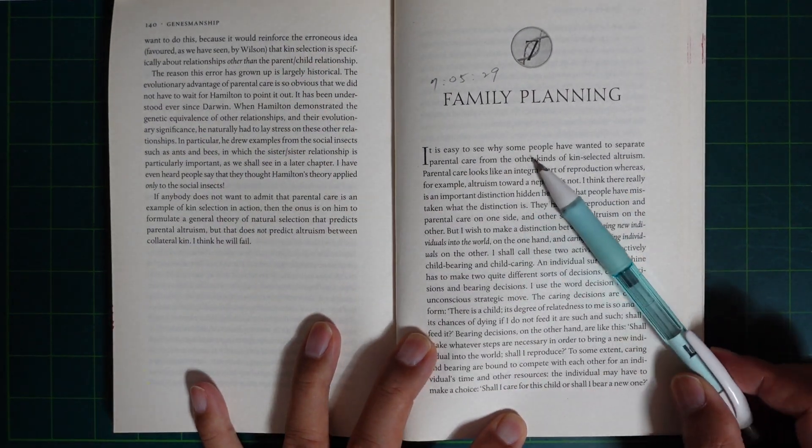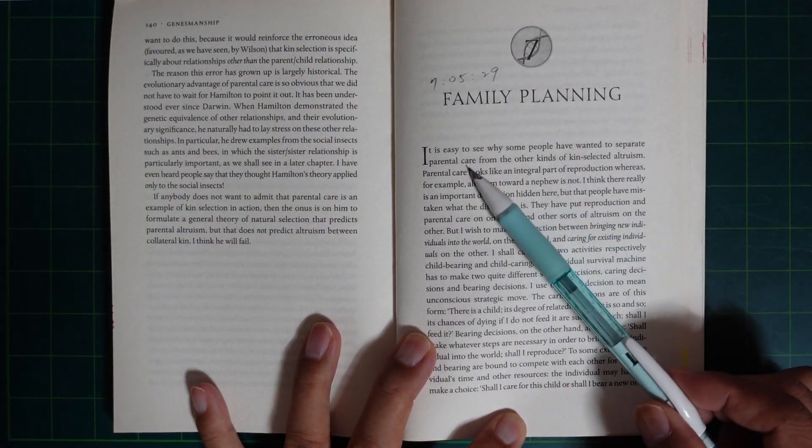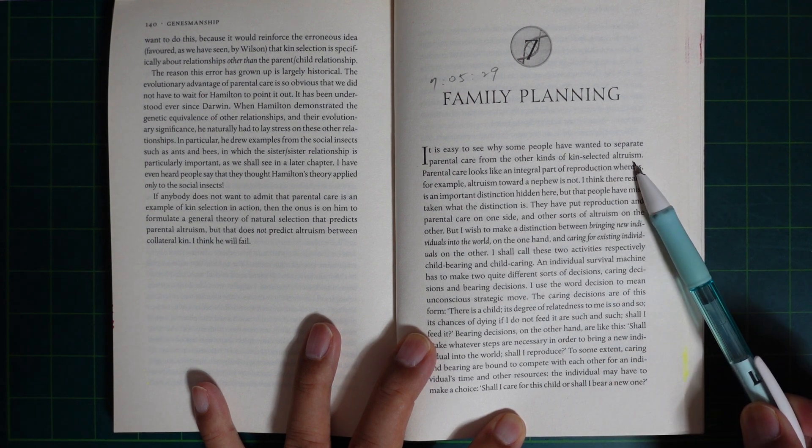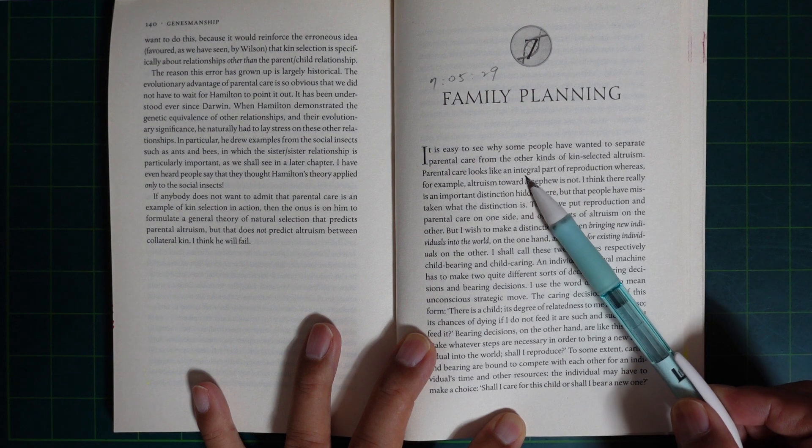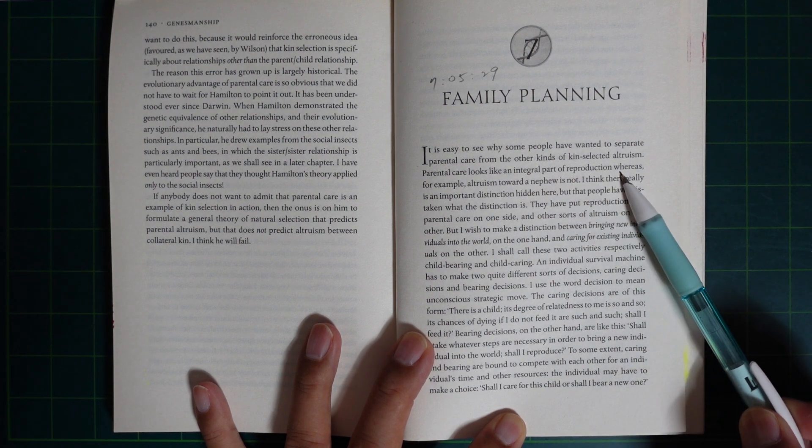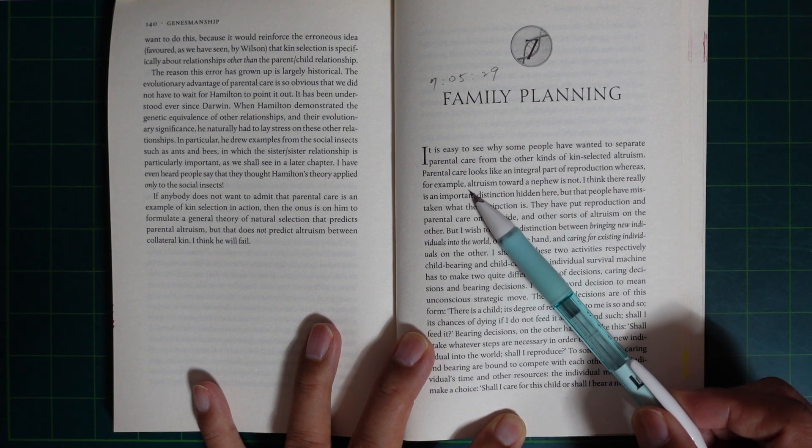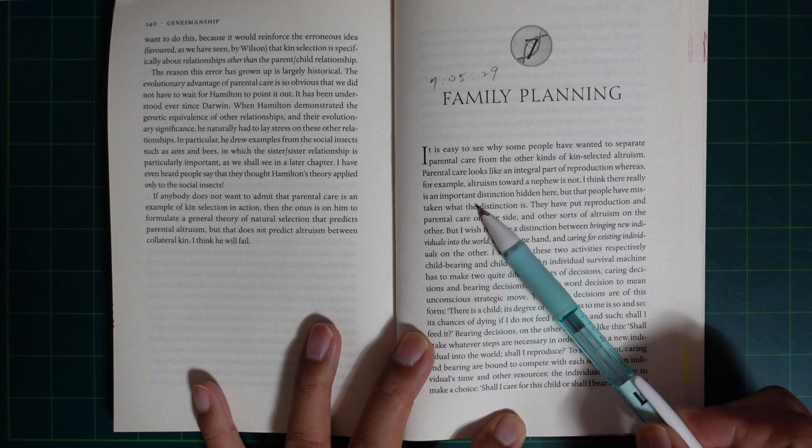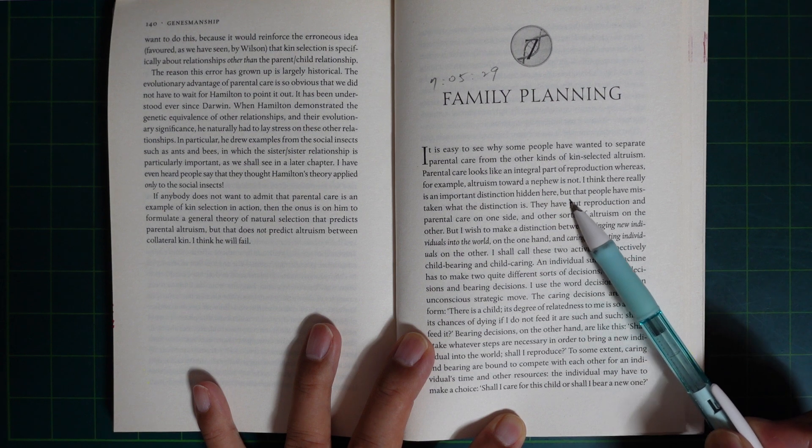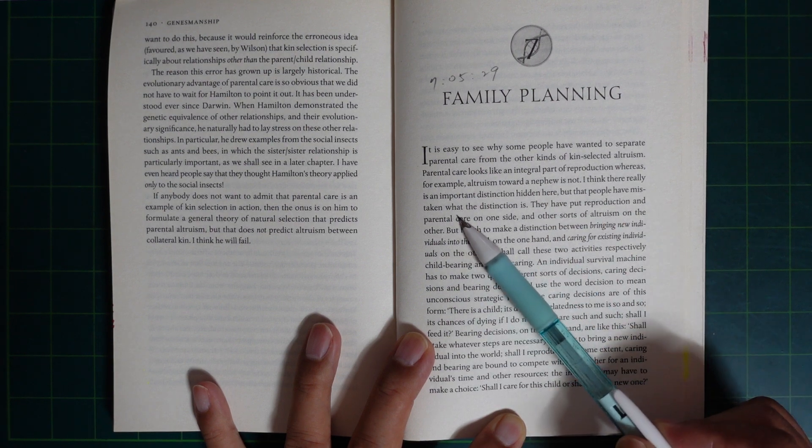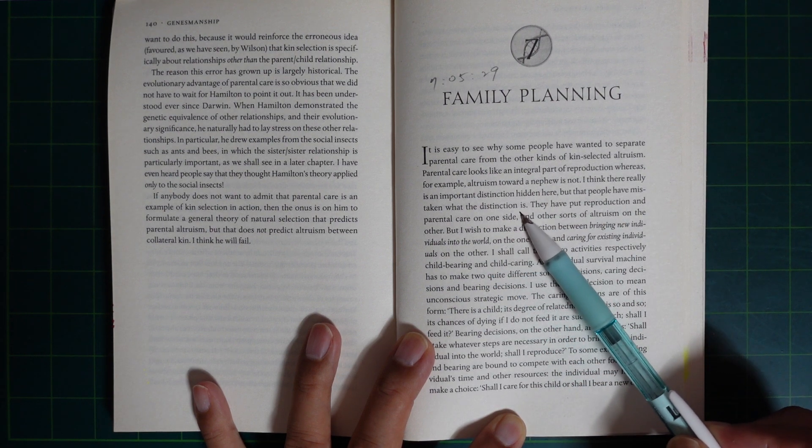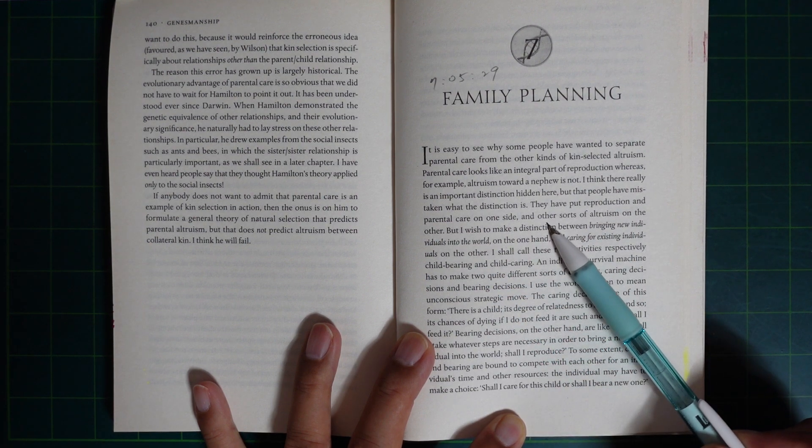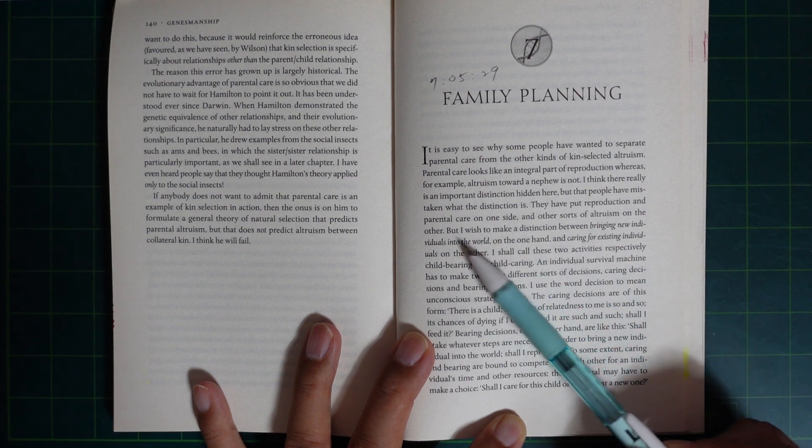It's easy to see why some people have wanted to separate parental care from the other kind of kin-selected altruism. Parental care looks like an integral part of reproduction. For example, altruism toward a nephew is not. I think there really is an important distinction hidden here but that people have mistaken what the distinction is. They have put reproduction and parental care on one side and other sorts of altruism on the other.